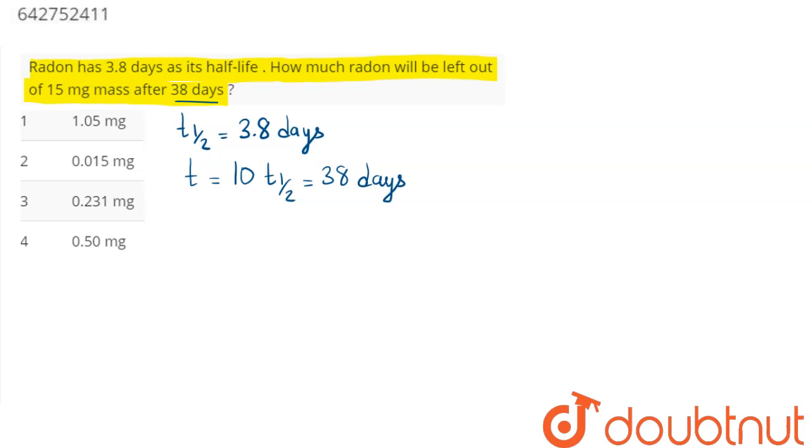in one half-life, the number of nuclei remaining is N₀ divided by 2¹. In two half-lives, the number of active nuclei remaining is N₀ divided by 2². In a similar manner,